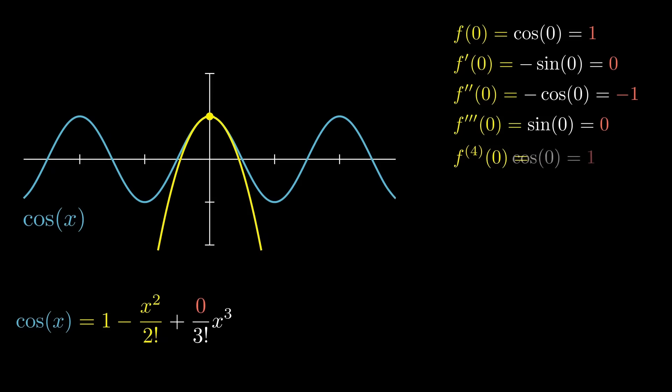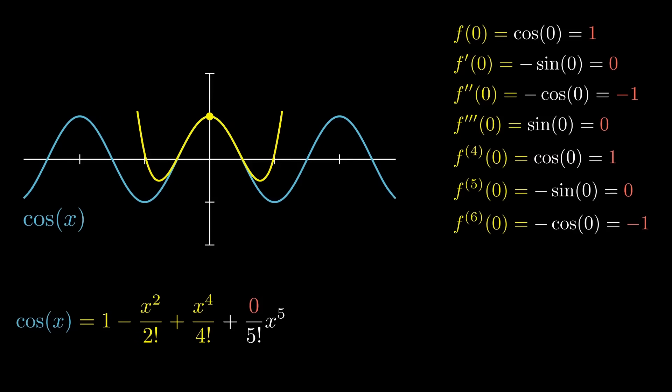And something interesting to note here is that in this case, unlike sine, which kept the odd polynomial terms, this one keeps the even ones. And cosine is an even function. So maybe there's a correlation there that might be interesting for you to figure out on your own. And of course, the approximation once again gets better and better over time. So keep in mind what those two approximations look like.